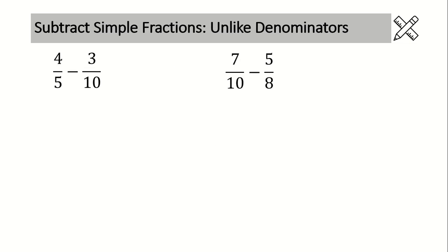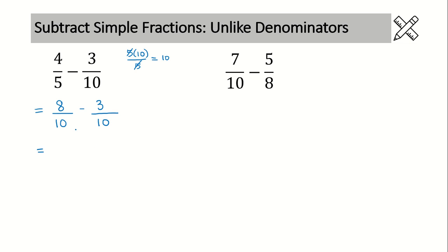Now let's look at some subtracting questions. These have unlike denominators, so step one is finding the lowest common denominator. Rewrite the question with no numbers. We're going to multiply 5 and 10, but divide out any common factors. Both 5 and 10 can be divided by 5, so the 5's cancel each other out: 5 divided by 5 is 1, leaving us with 10. The LCD here is 10. Write that in and make equivalent fractions. The first fraction goes from denominator 5 to 10 — multiplying by 2 — so 4 times 2 is 8. The second fraction doesn't change, so we write in the numerator 3. We have common denominators, so perform the subtraction: 8 minus 3 is 5.